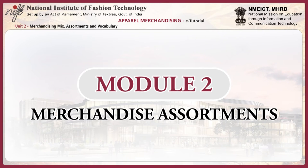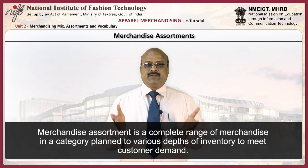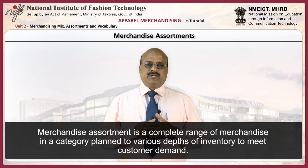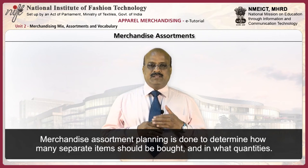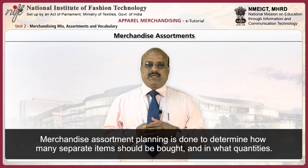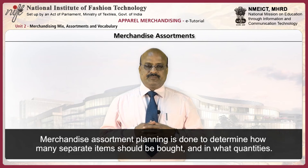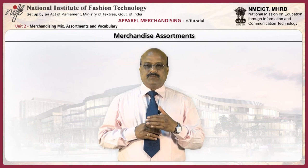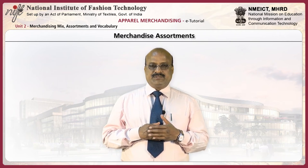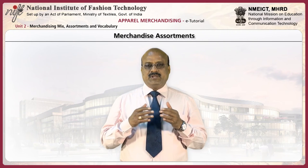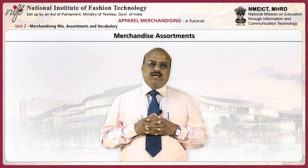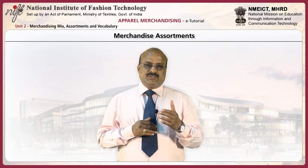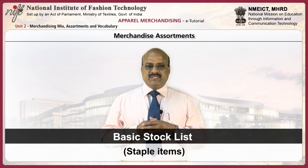This module looks at the various assortments of merchandise. Merchandise assortment is a complete range of merchandise in a category planned to various depths of inventory to meet customer demand. Merchandise assortment planning is done to determine how many separate items should be bought and in what quantities. The goal of merchandise assortment planning is to ensure that product choice meets targeted customer needs. The merchandiser must carefully plan the number of units to have on hand to meet expected sales per brand, size and color combination.